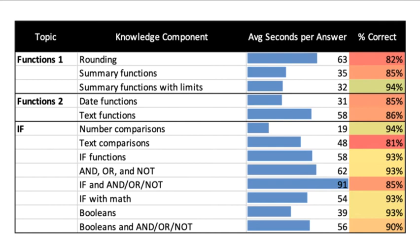Some of the hardest things involve students combining multiple steps. For example, text functions are particularly difficult not in isolation but when students are asked to combine multiple steps together. Similarly, the if that includes and, or, and not is the hardest in terms of time taken as students struggle to combine multiple functions together.